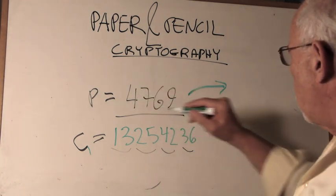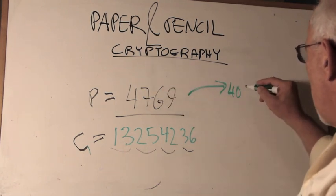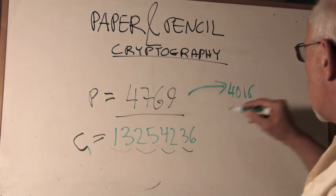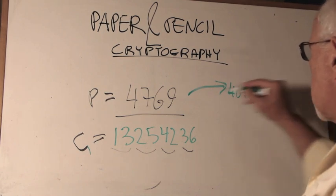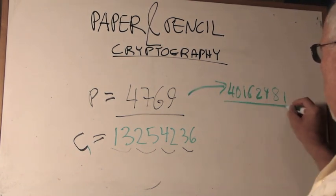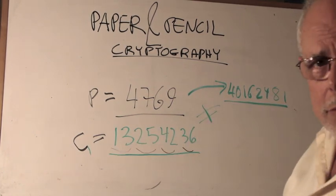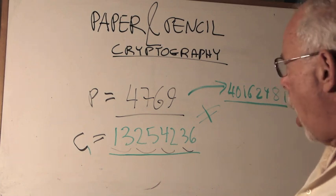Instead of 4, we can use 4, 0. Instead of 7, 1, 6. Instead of 6, 2, 4. Instead of 9, 8, 1. Now, this number is completely different from this number.